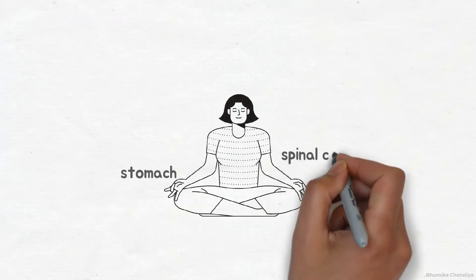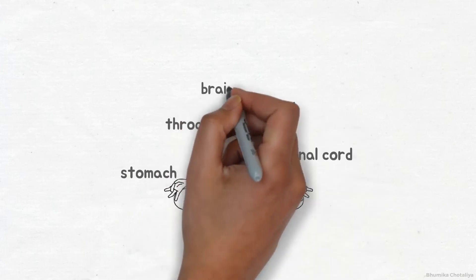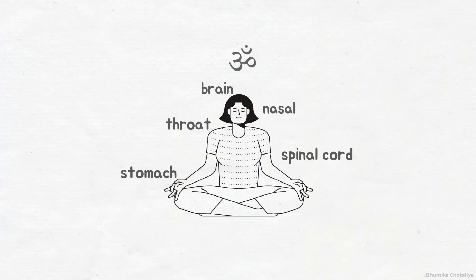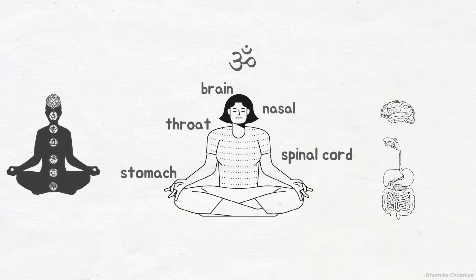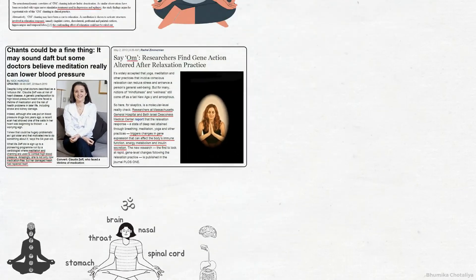When we chant the Om Mantra, it activates the stomach, spinal cord, throat, nasal region, and the brain. When chanted repeatedly, the energy moves from the abdomen up to the brain, thereby channeling energy and activating the spinal cord and brain.